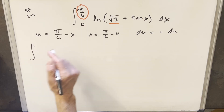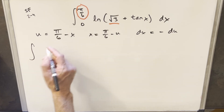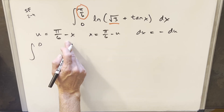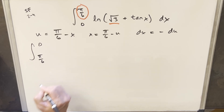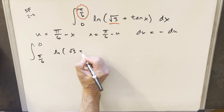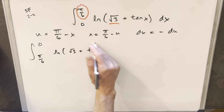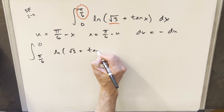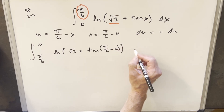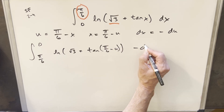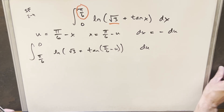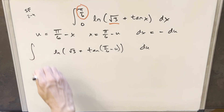The nice thing with this substitution is it just flips our bounds around. Plugging pi over six in gives zero, and plugging in zero gives pi over six. Then we have natural log of square root of three plus tangent of pi over six minus u, times minus du. I'm going to bring that minus sign out front and use it to flip the bounds back around.